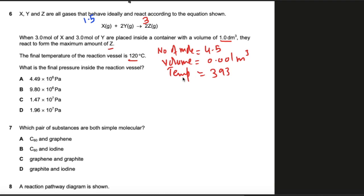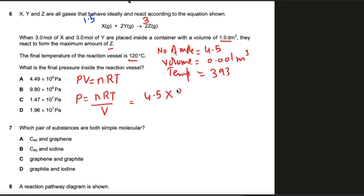Using PV = nRT, pressure P = nRT/V = (4.5 × 8.31 × 393) / 0.001. Calculating: 4.5 × 8.31 × 393 ÷ 0.001 gives approximately 14,696 Pa. This is the final answer.